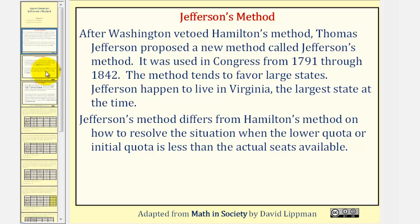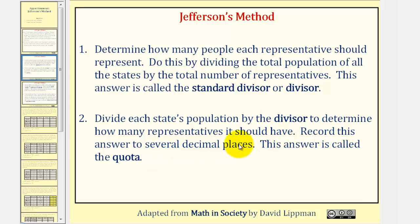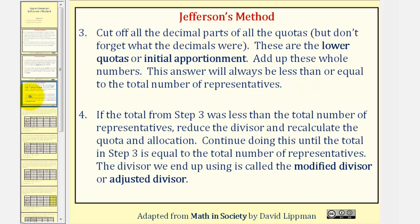The first three steps of Jefferson's method are the same as Hamilton's method. Step one: determine how many people each representative should represent. We do this by dividing the total population by the total number of representatives — this is called the standard divisor. Step two: divide each state's population by the divisor to get the quota, recorded to several decimal places. Step three: cut off the decimal part of all the quotas to get the lower quotas or initial apportionment.